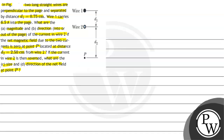To understand the question we must first revise the key concepts on which the question is based. The first key concept is that the direction of the magnetic field around a wire is given by the right-hand thumb rule. It says that if we align the thumb of our right hand in the direction of the current in a wire, then the curl of our fingers gives the direction of the magnetic field around that wire.